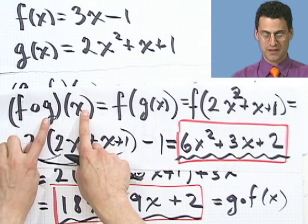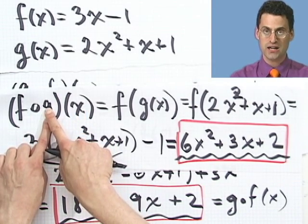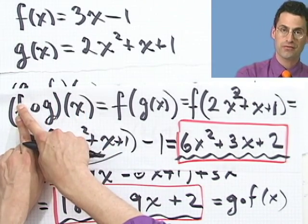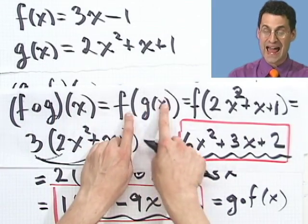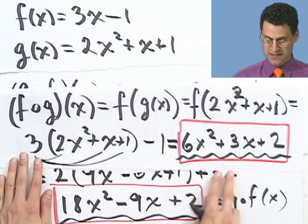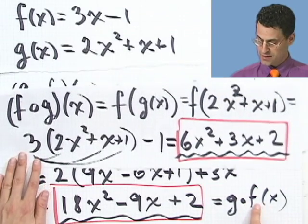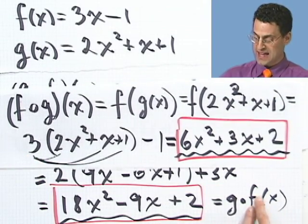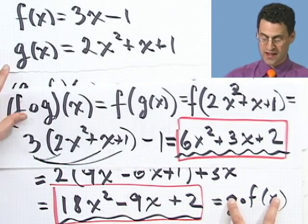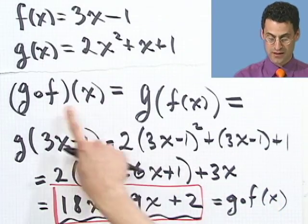If I write f composed with g of x, that means first take x, plug it into g, take that answer, plug it into f. You sort of work from the inside out. Just like in this example here, here I first take x, plug it into f, the inside, and then plug that into g. That's what we saw right here. So that's composition of functions. Something that actually we didn't even have with numbers. It's a new way of combining functions together and to build new functions.